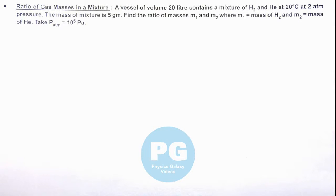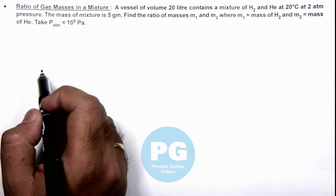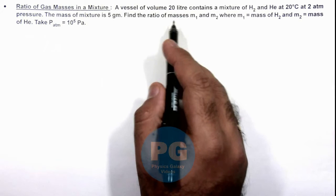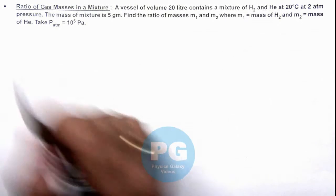In this illustration, we'll be analyzing the ratio of gas masses in a mixture. We are given that a vessel of volume 20 liter contains a mixture of hydrogen and helium at 20 degree centigrade and 2 atmospheric pressure.